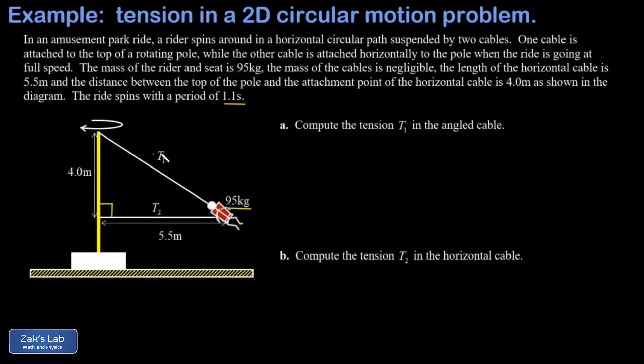The question is to find the tensions in the two cables when the ride is going with a period of 1.1 seconds. First we're asked for T1, the tension in the angled cable, and then T2, the tension in the horizontal cable.